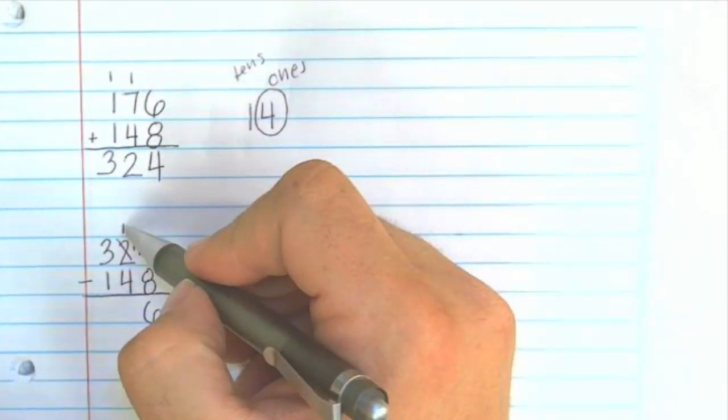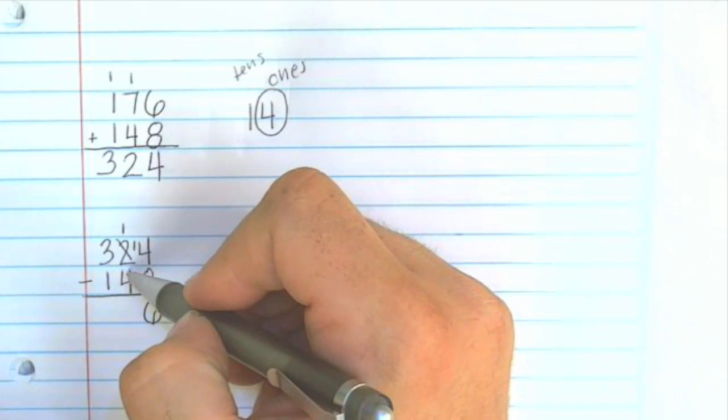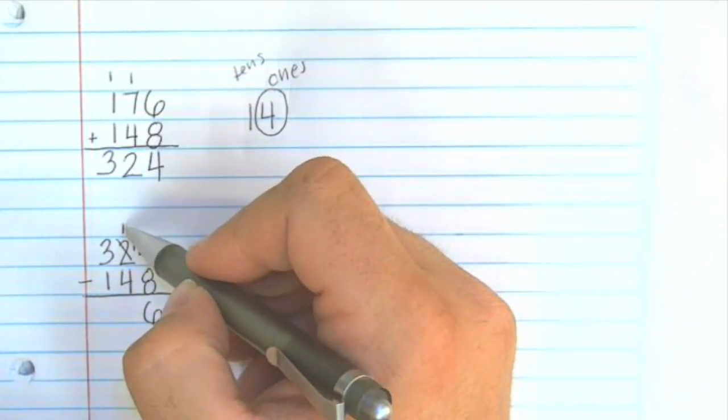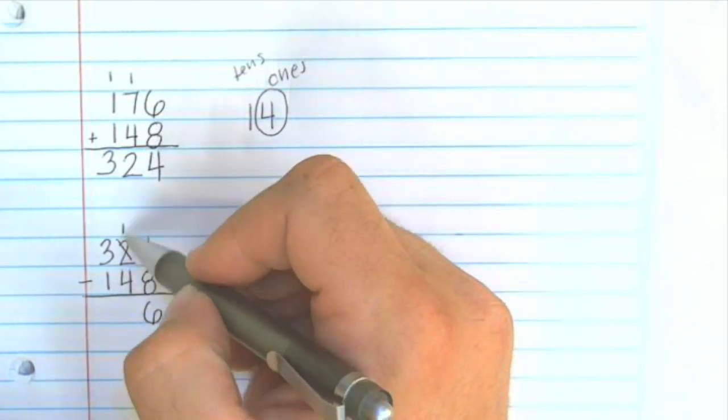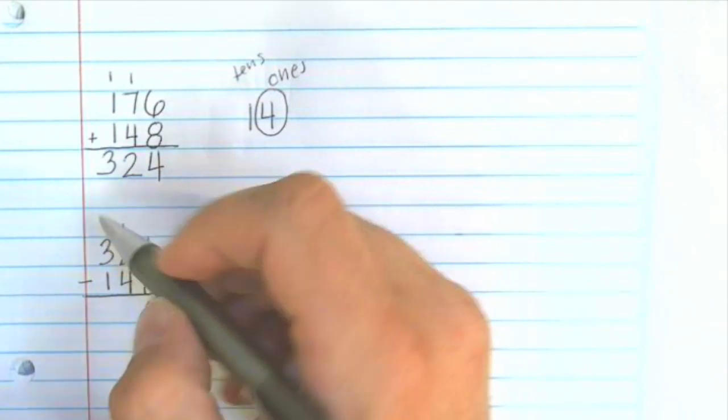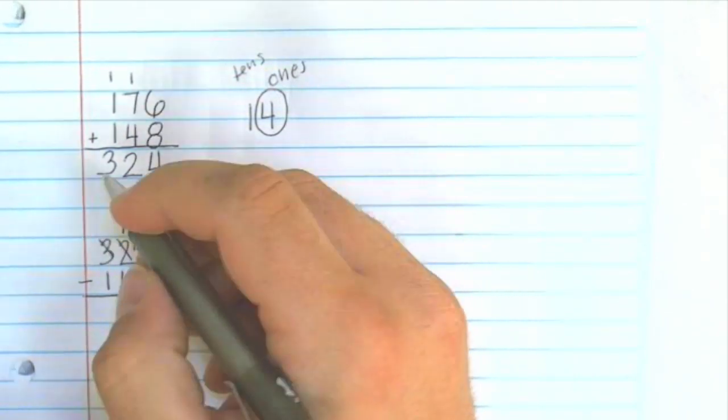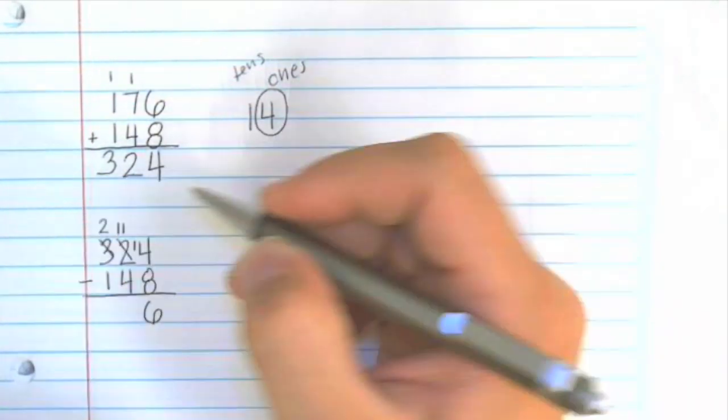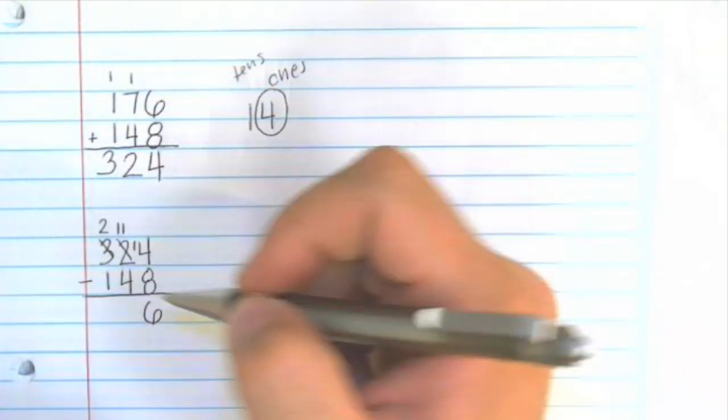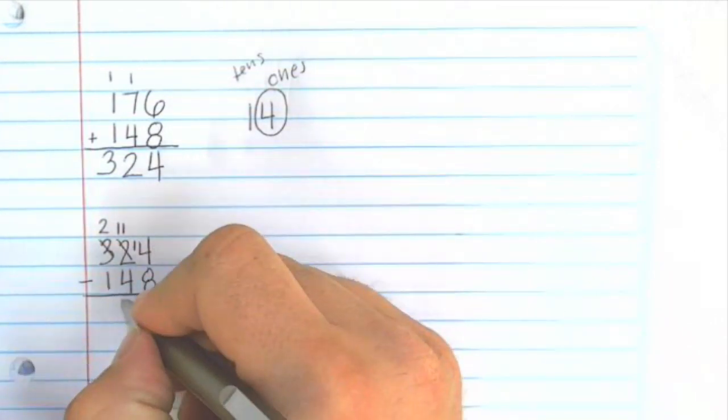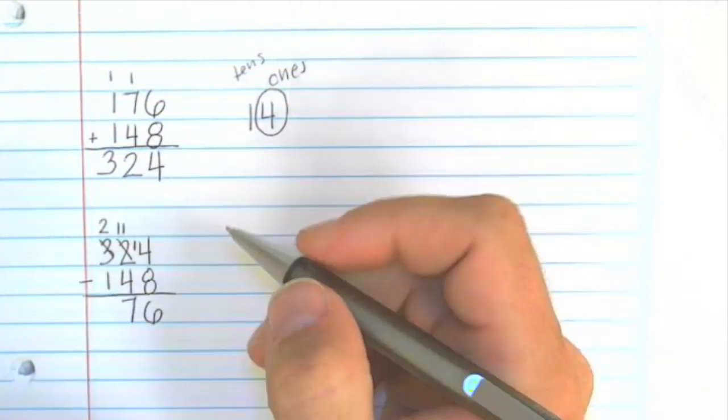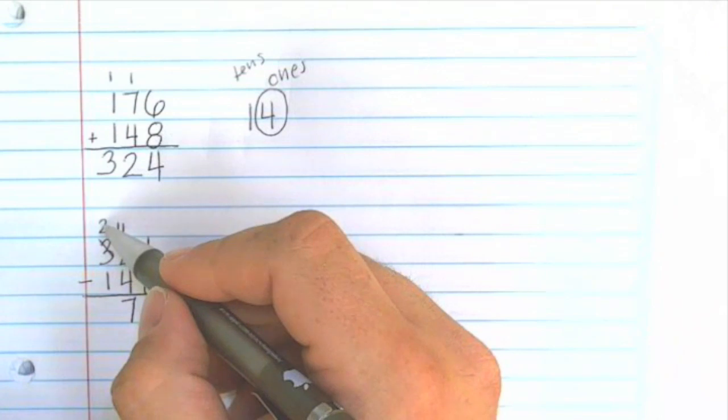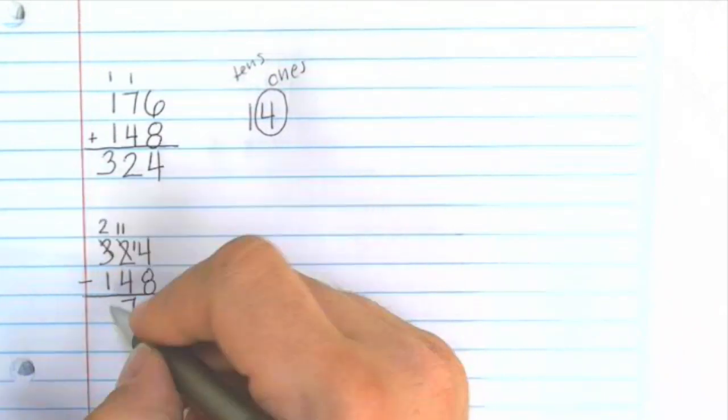And we have one minus four. Four is larger than one. So we can't take four away from one. So we need to look next door. We have three here. If we borrow one we're left with two here. And then this one becomes eleven. Eleven minus four is seven. And then we're left with two minus one is one.